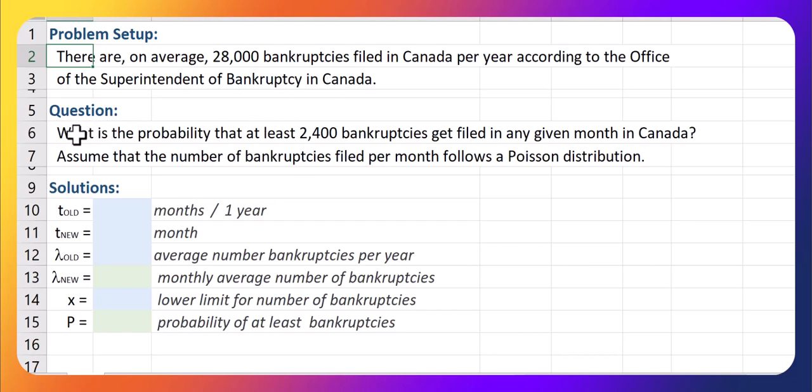Now what we want to calculate is what is the probability that at least 2,400 bankruptcies get filed in any given month in Canada? And we're going to assume that the number of bankruptcies filed per month follows a Poisson distribution.